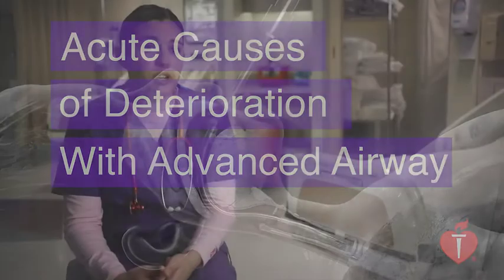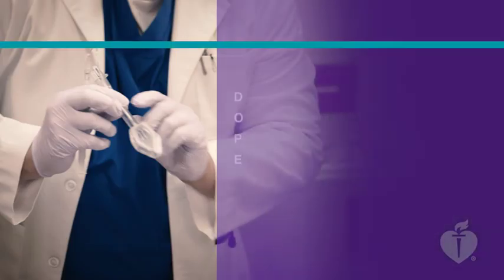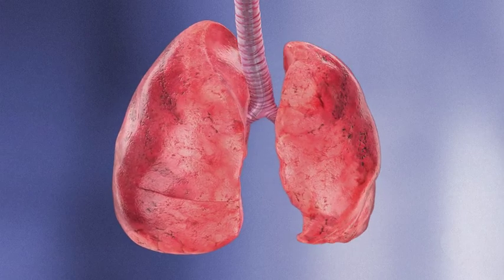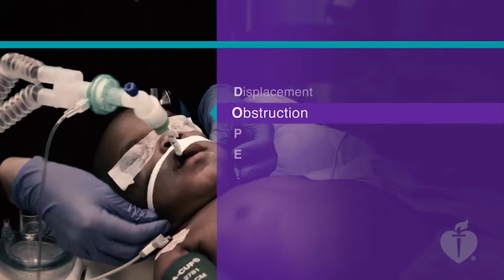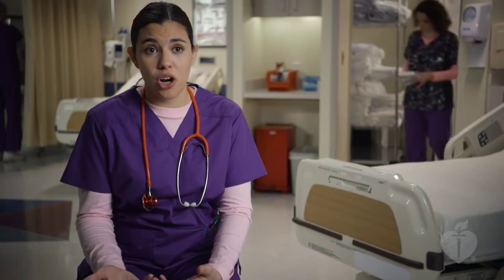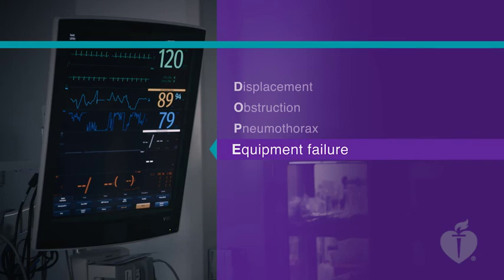If sudden deterioration is observed in a patient with an advanced airway, it may be caused by one of several complications. You can use the mnemonic DOPE to help remember these. The airway may be displaced — for example, an endotracheal tube may be pulled out of the trachea or advanced into the right or left main bronchus. Obstruction of the airway may be caused by secretions, blood, pus, or a foreign body. Kinking of the airway may also cause acute obstruction, particularly in smaller endotracheal tubes. A pneumothorax usually results in decreased chest expansion and breath sounds on the affected side, and a sudden deterioration in pulse oximetry may occur. In severe cases, hypotension and even cardiac arrest may occur. Equipment failure can also be a cause: disconnection from the oxygen supply, power failure to a mechanical ventilator, malfunction of valves, or a leak in the bag mask device or circuit.